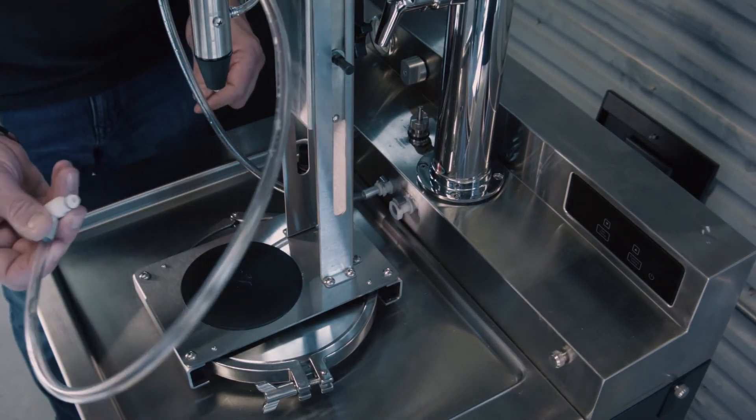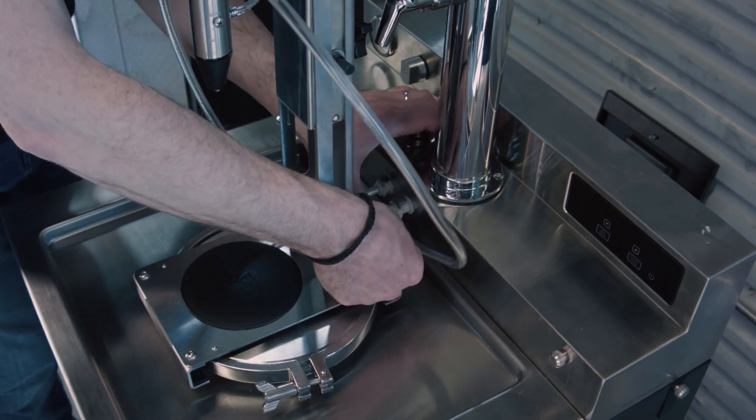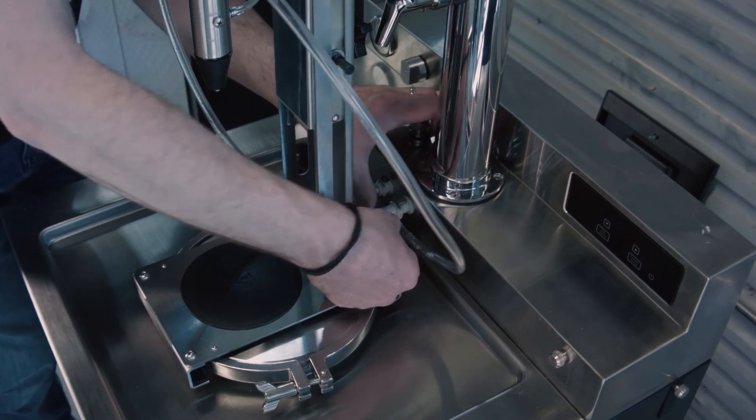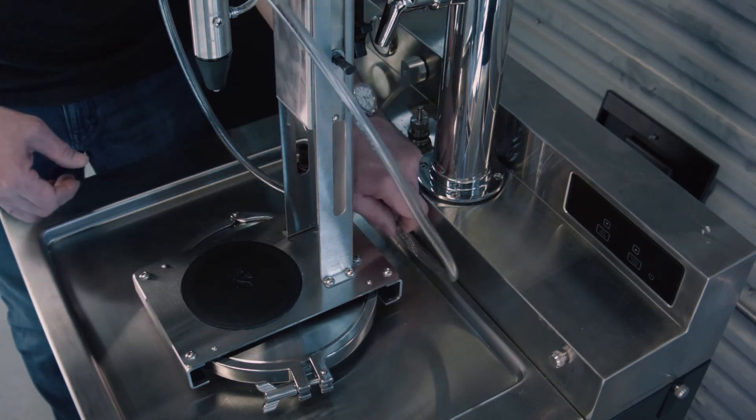The next thing you do is you take the liquid fitting and go to the other port of the VESI and push that in. As is the case with both of them, you push them in until you hear a click, and then they're locked into place.